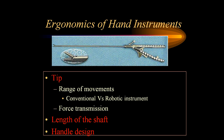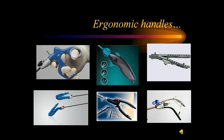Handle design of hand instruments and needle holders is also of paramount importance. Options include pistol grip, thumb grip, and in-line grip, all of which can be designed with ergonomic principles so that we can use them efficiently, especially in long procedures where we need to do a lot of suturing.